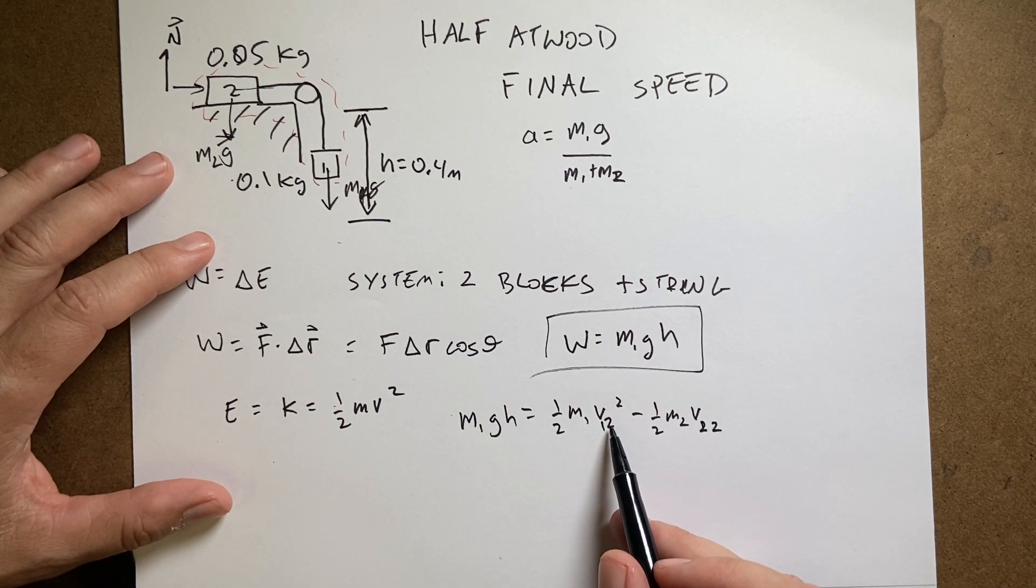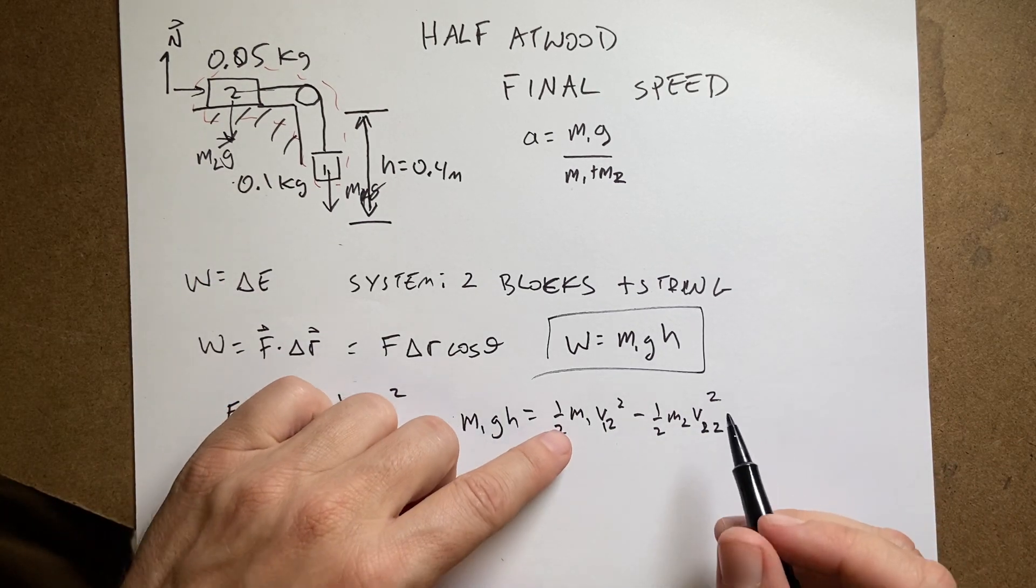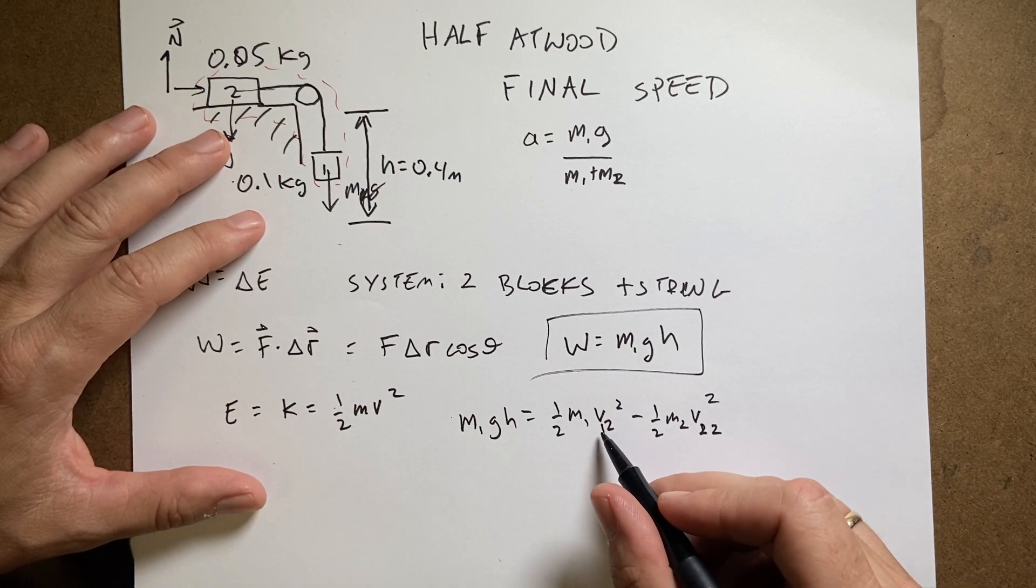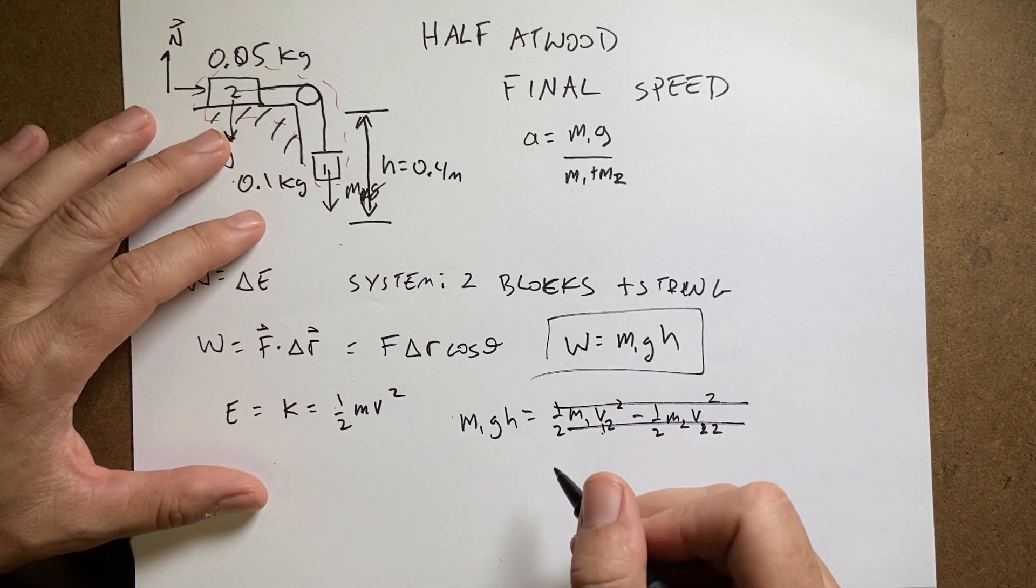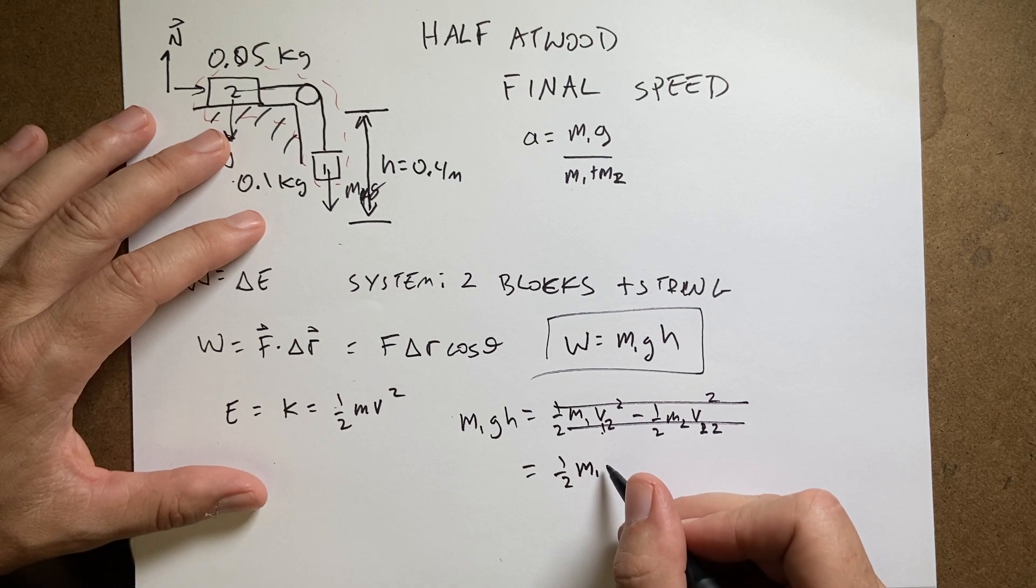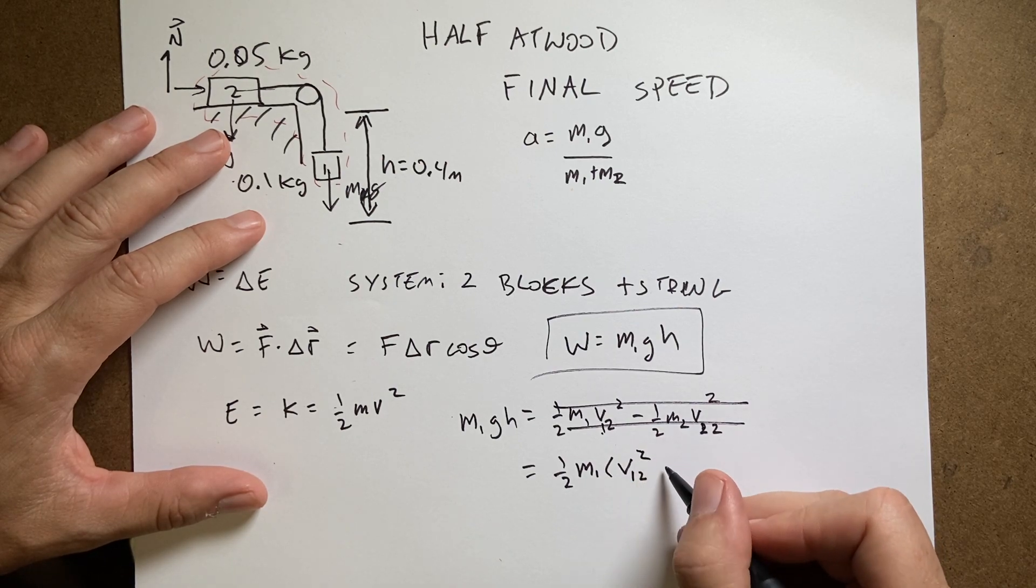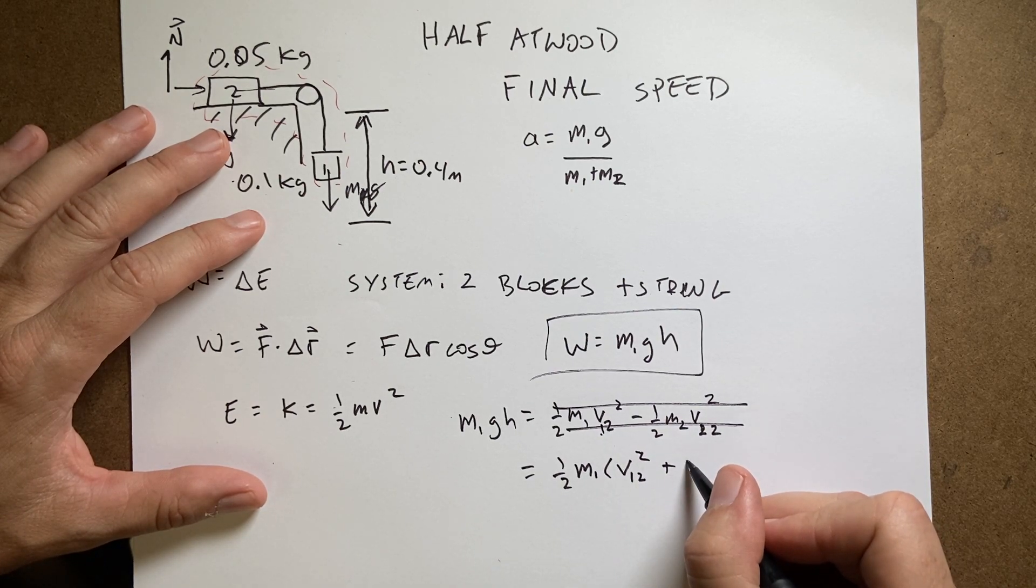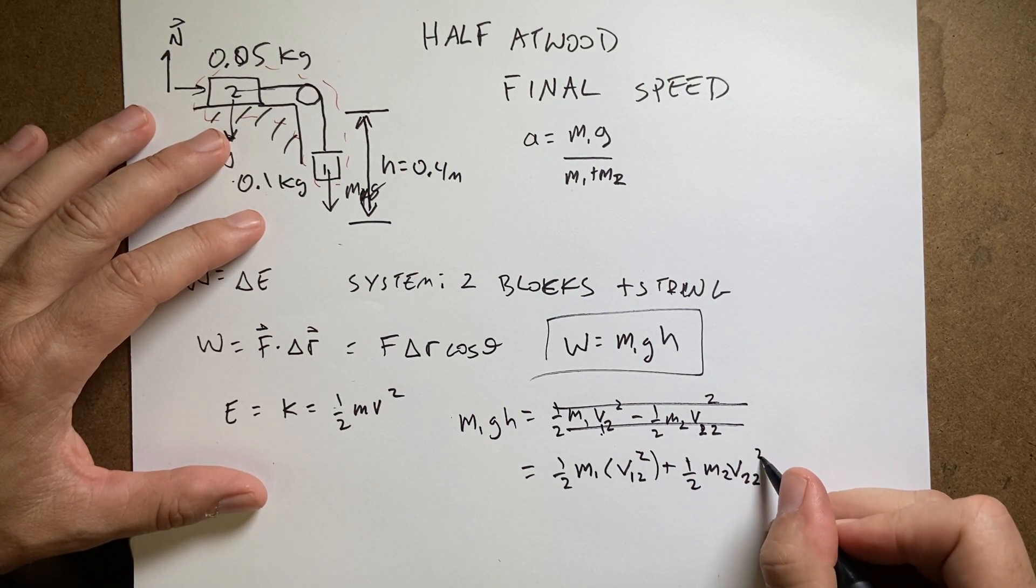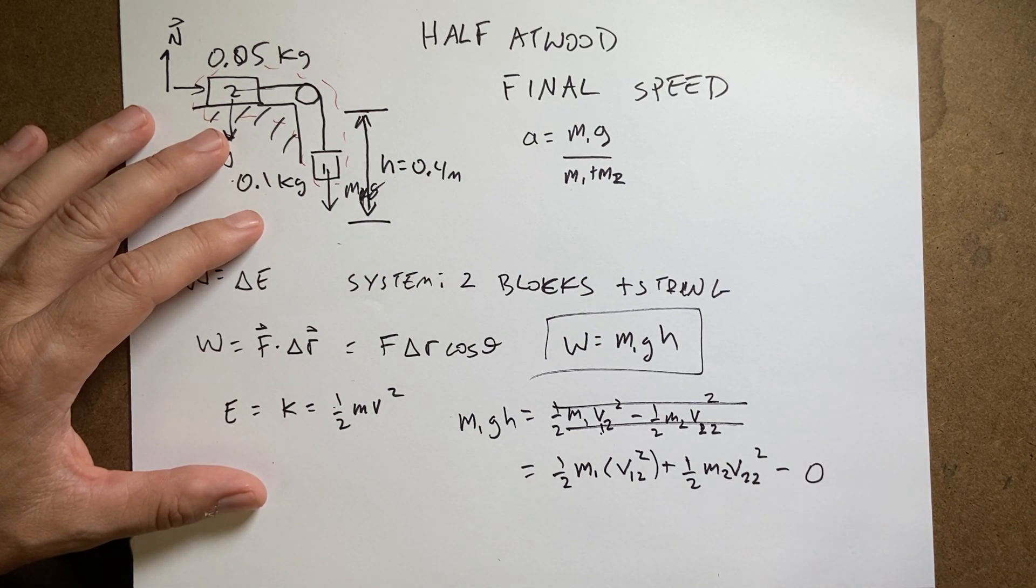So this is the velocity of 1 at the end, this should be 1, 1, okay. The final kinetic energy is one-half m1 v1,2 squared plus one-half m2 v2,2 squared minus the initial kinetic energy. They both start from rest, so that would be zero.